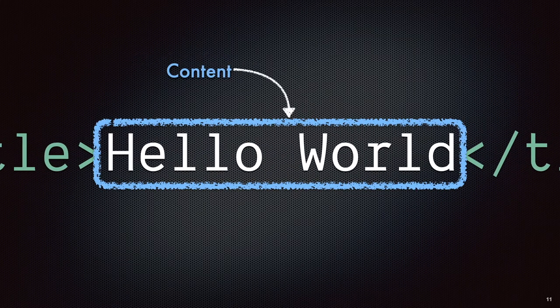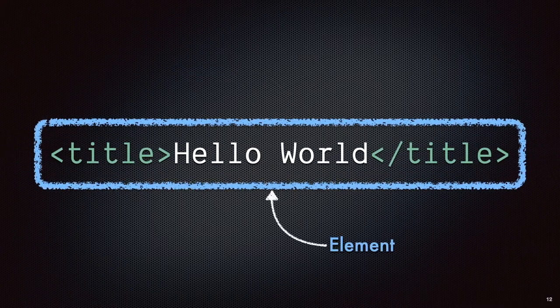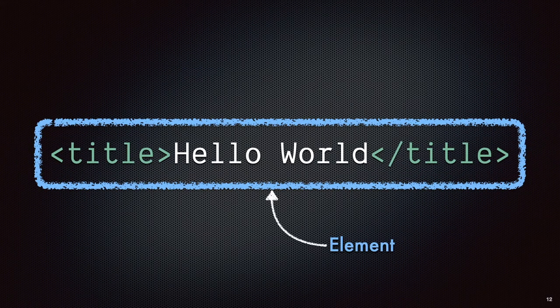In between the start tag and the end tag, you've got the content. In this case we've got some text content, but you could have other content in here. So we've got our "hello world". And then all three of these pieces together — the opening tag, the content, and the closing tag — form our element.